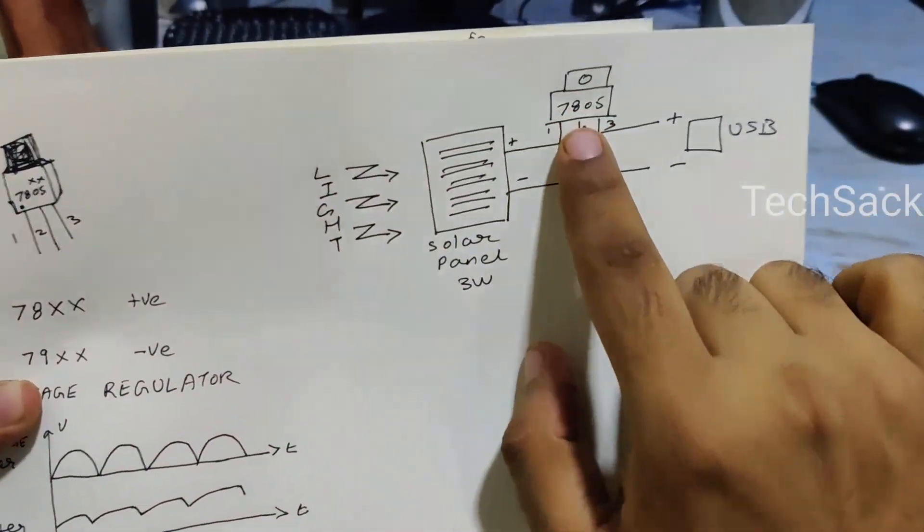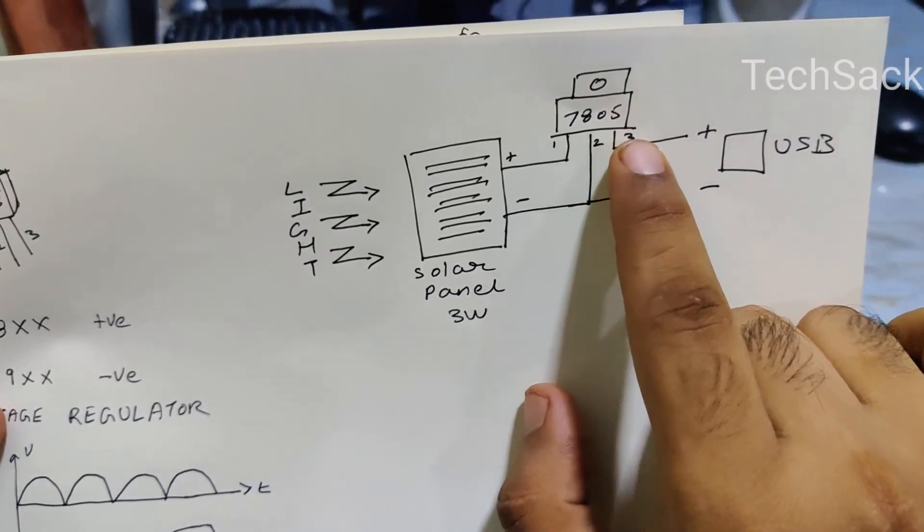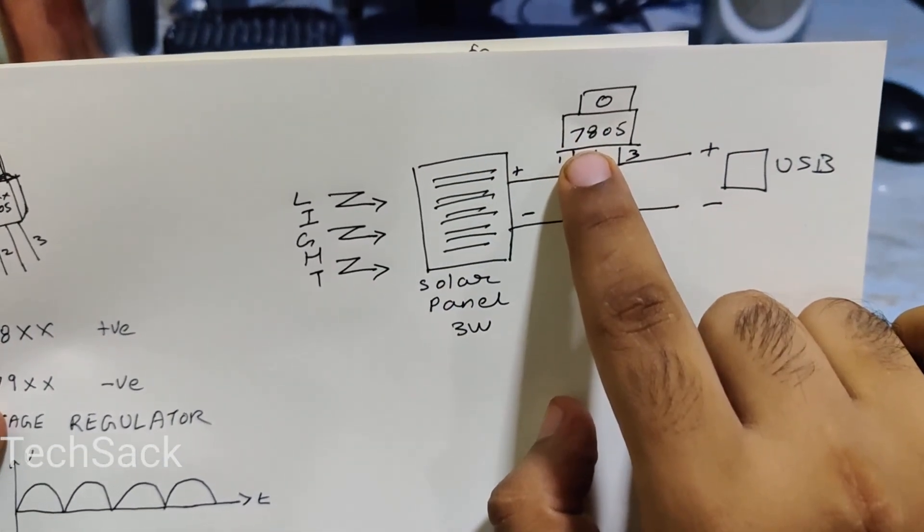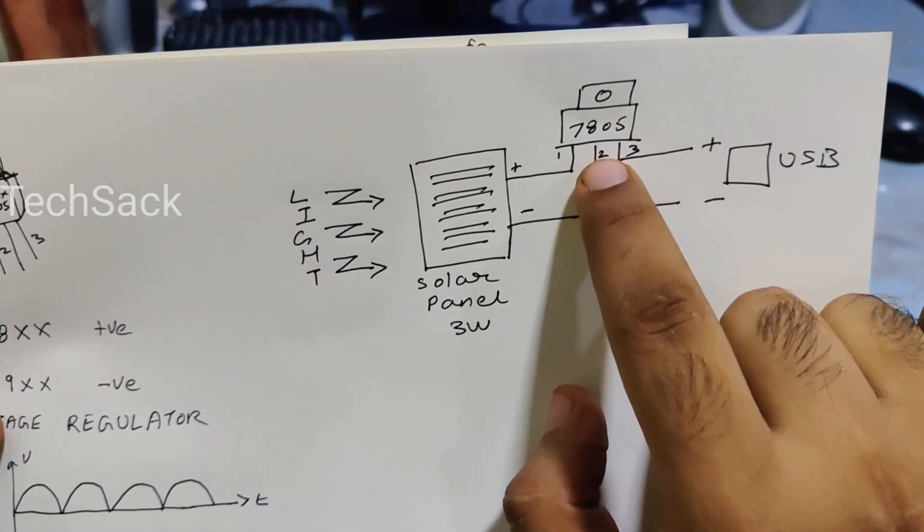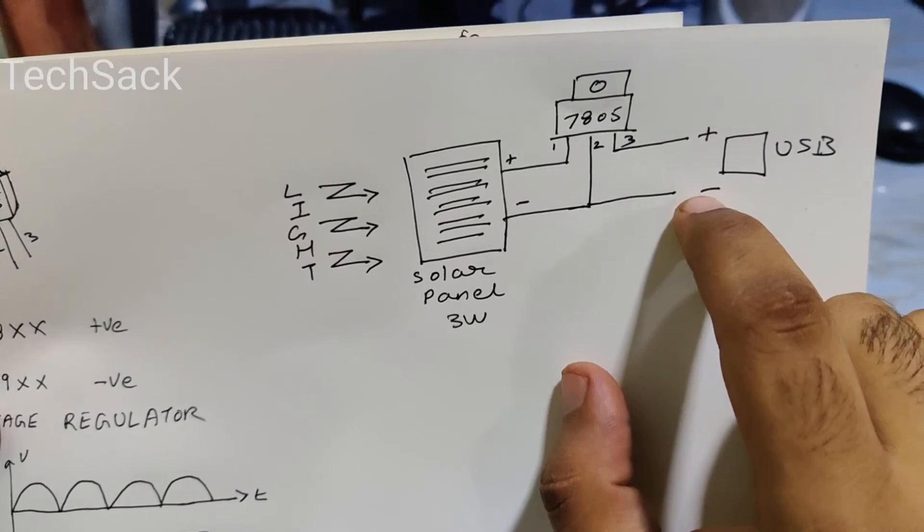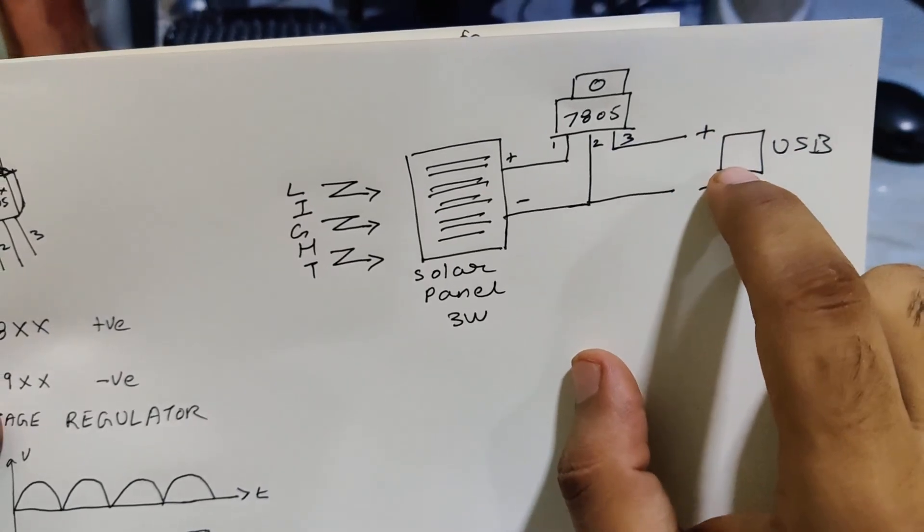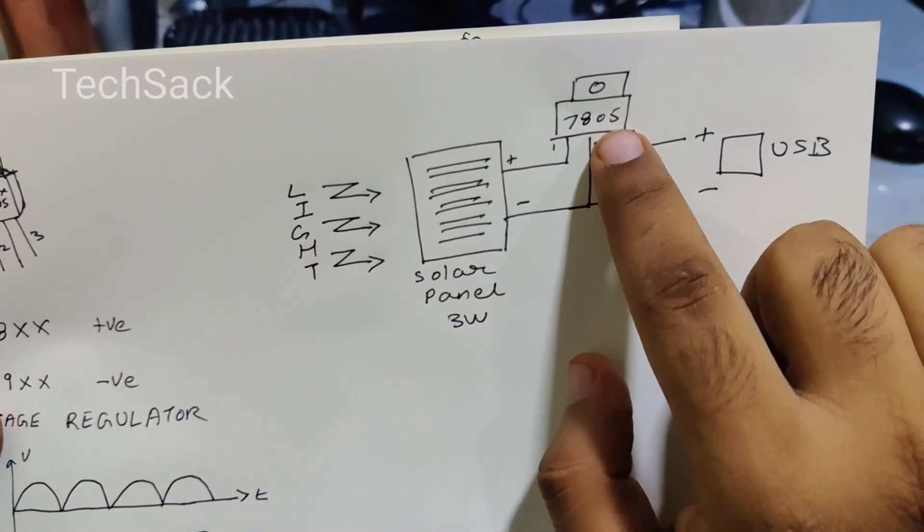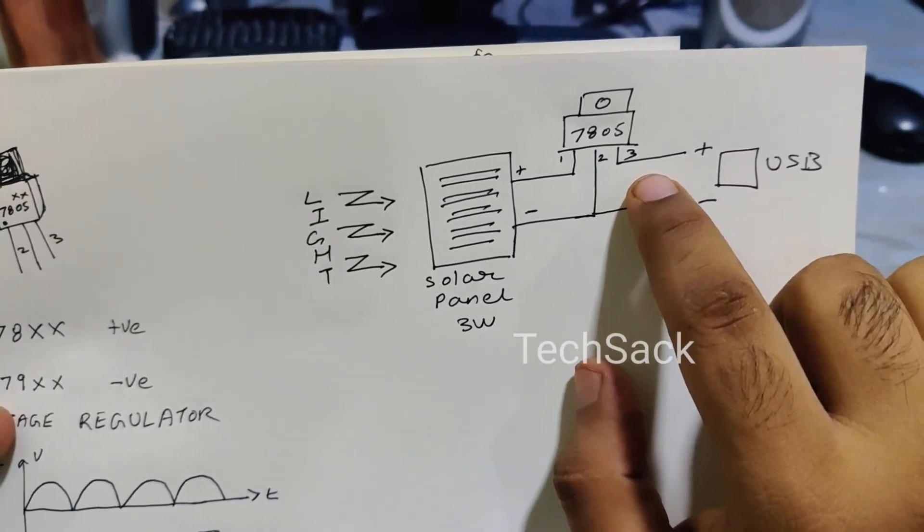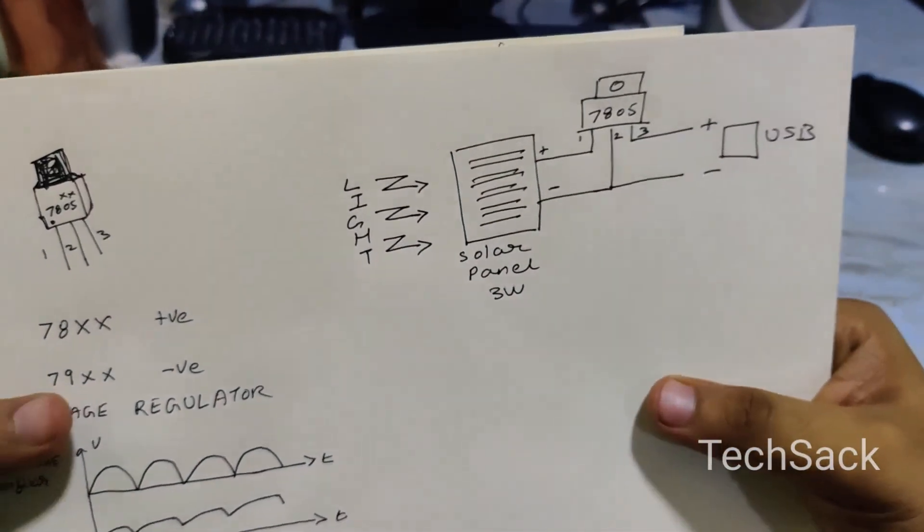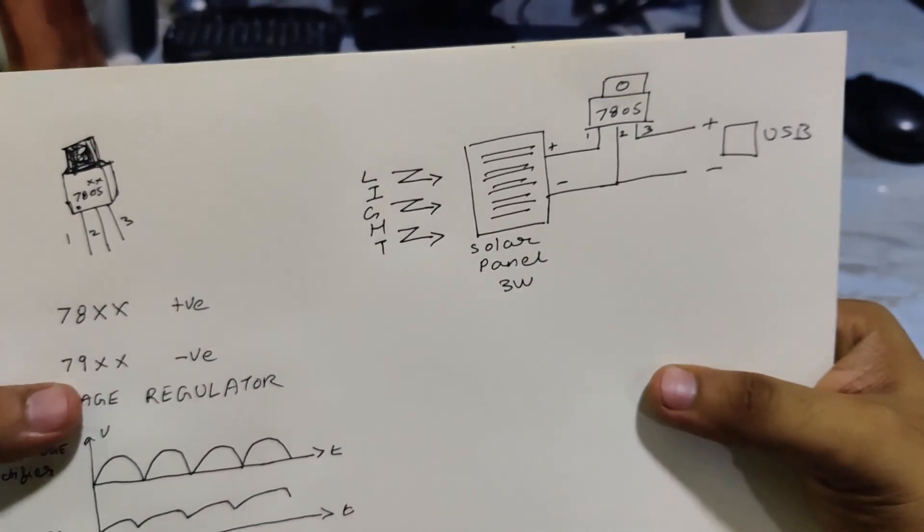So I will be using this 7805 IC in this configuration where the positive will go to the first pin, the positive of the solar panel. The negative of the solar panel will go to the ground, also connected to the load that is to the USB charging socket. And the third pin of the IC regulator, which is the regulated 5 volt voltage, would go to the positive of the USB where we will be connecting the devices to charge.